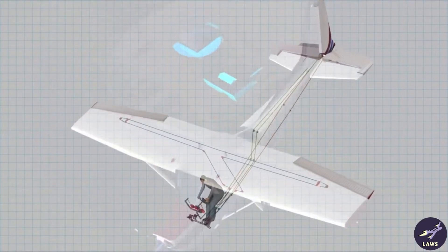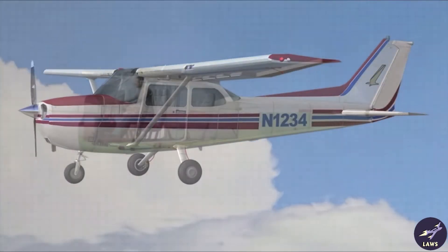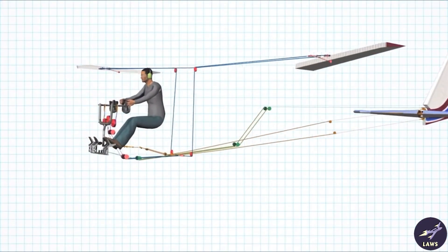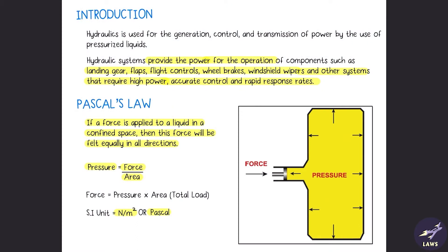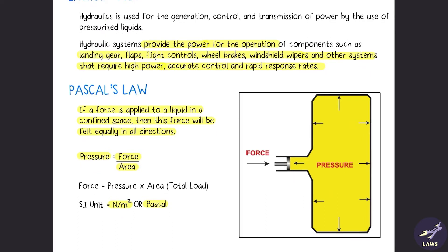In that case we use manual control systems, like a cable control system. In case of larger aircrafts like our modern airliners, the control surfaces are very large, so we won't be able to control them manually. In that case we need hydraulic systems. Hydraulic systems provide the power for operation of landing gear, flaps, flight controls, wheel brakes, windshield wipers, and many other systems.